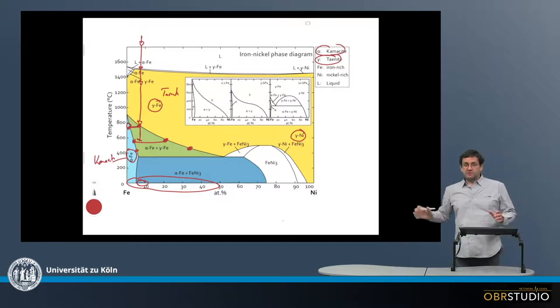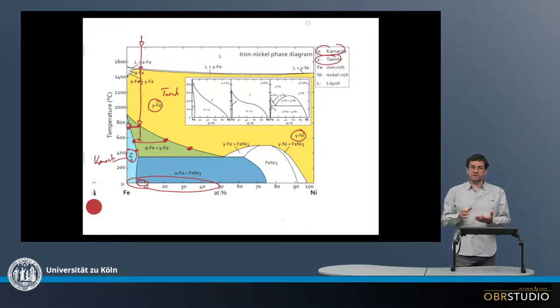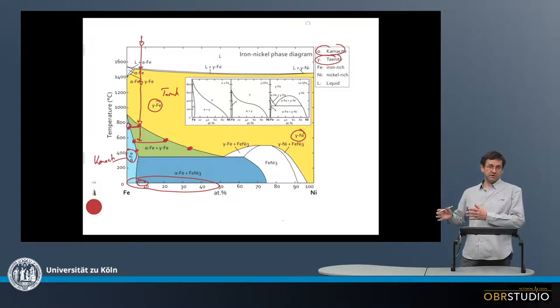This also means that in the end, the composition of the metal usually consists of two phases. One is the kamacite, the iron-rich, nickel-poor metal, and the taenite, the more nickel-rich and more iron-poor metal.